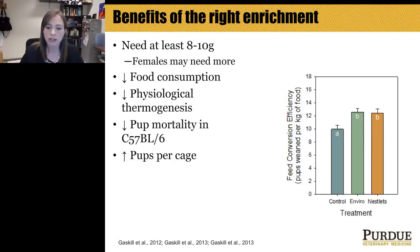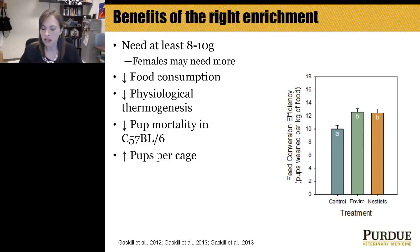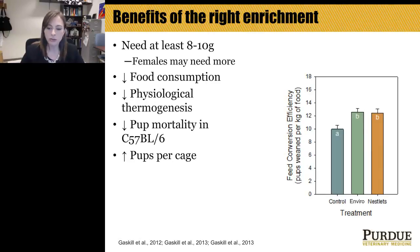Providing the right nesting material — 8 grams of Envirodry or 3 Nestlets — results in reductions in food consumption, reduced physiological thermogenesis, reduced pup mortality, and more pups produced per cage. Regardless of enrichment type, providing enough nesting material resulted in significantly more pups than controls with no nesting material — an average of 10 to 12.5 more pups per cage across several strains over the breeding life of an animal.